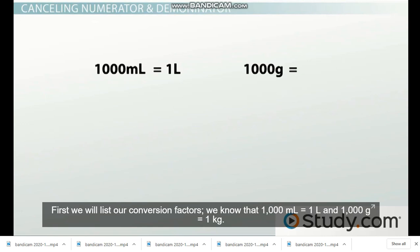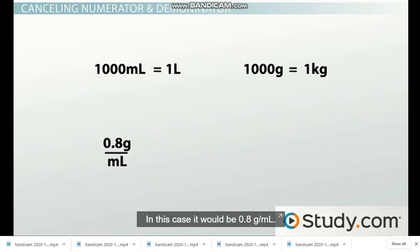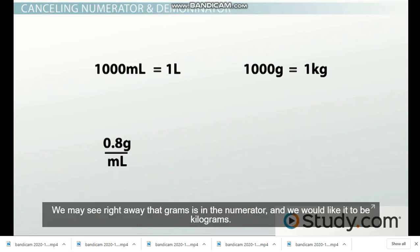So how will we set this up? Always start with the value that the question gives you. In this case, it would be 0.8 grams per milliliter. You may see right away that grams is in the numerator, and we would like it to be kilograms.